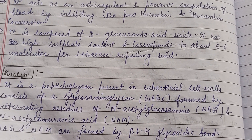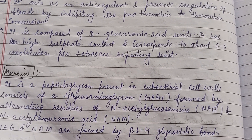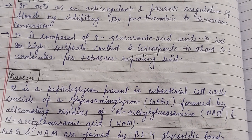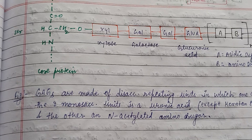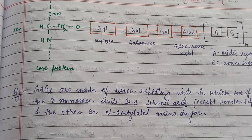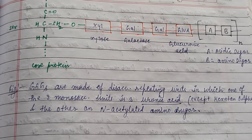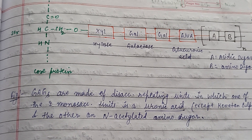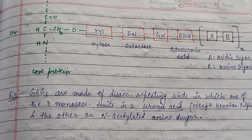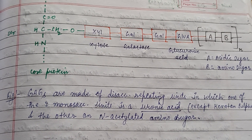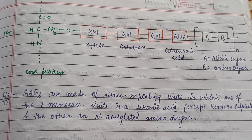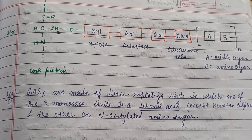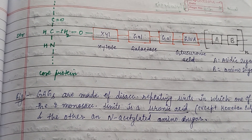Murein is formed by alternating residues of N-acetylglucosamine and N-acetylmuramic acid. Glycosaminoglycans are made up of disaccharide repeating units in which one of the two monosaccharide units is a uronic acid, except in keratan sulfate, and the other is an N-acetylated amino sugar.